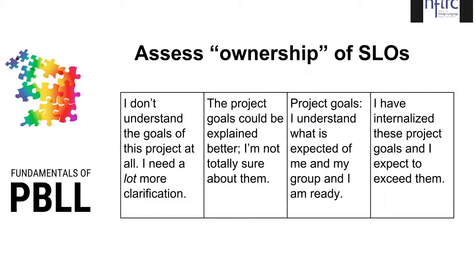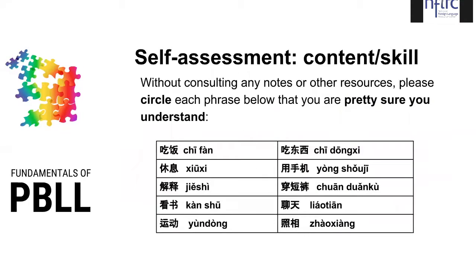With that student learning objective in mind, the first thing to do is assess whether learners understand and agree with those student learning outcomes. Here is a formative assessment of the learner's relationship to the SLO — ranging from 'I don't understand the goals of this project at all and need more clarification' through various gradients, up to 'I understand what is expected and I'm ready.' There are other kinds of assessment beyond paper-and-pencil tests.